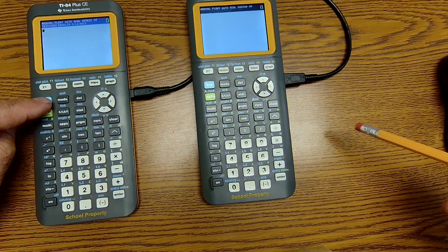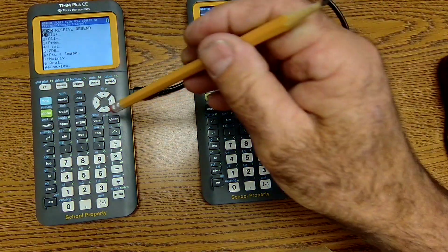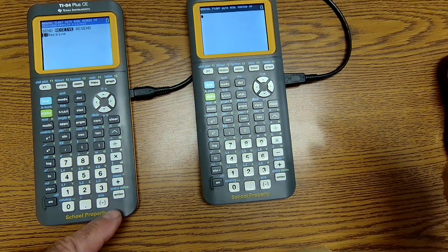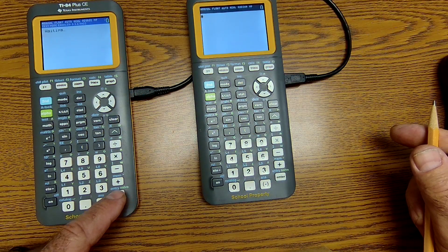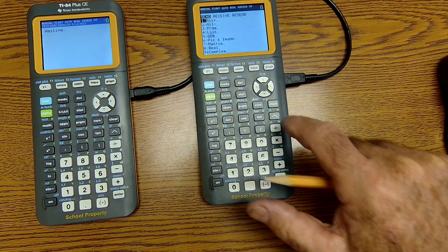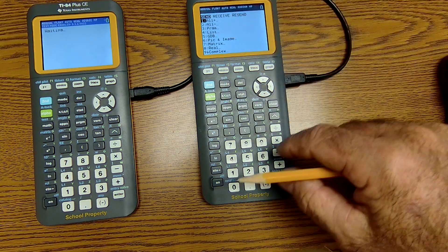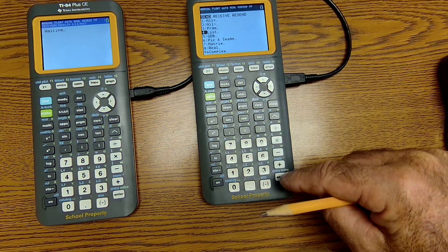To do that, I'm going to hit second link. So second X key. I am going to make this one the receiver. I scroll over to receive. I hit enter. Now it's waiting. Same thing on here. I hit second link. Then I'm going to scroll down to number four, the list. So I scroll down to list, enter.